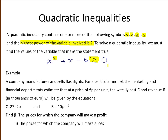To solve the inequality, you must find the values of the variable that make the statement true. Quadratic inequalities arise in many different areas. One area is in physics, for example, when determining the range of times an object in motion is above or below a certain height.